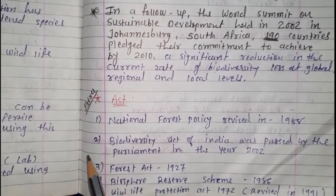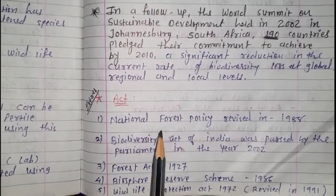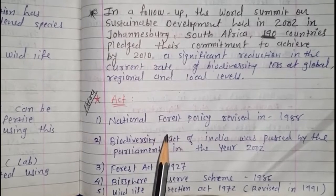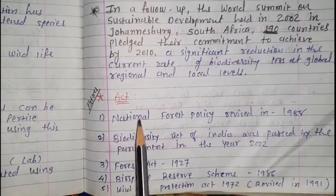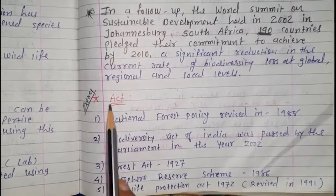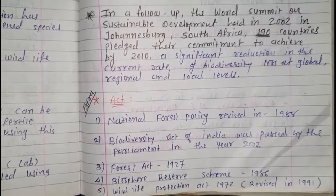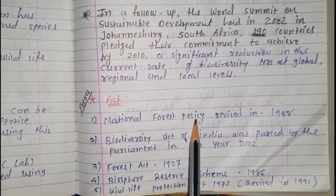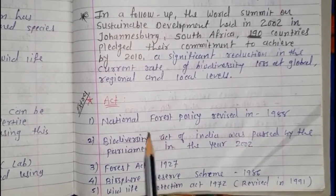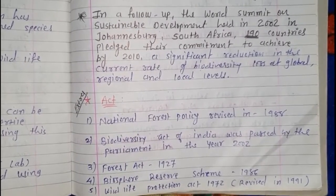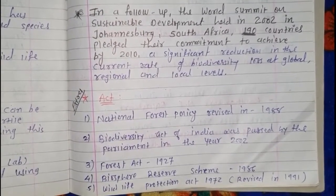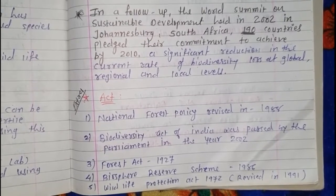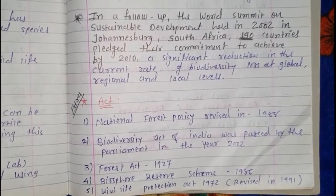Now let's look at some extra topics for competitive exams — these may not be asked in theoretical exams but are important for NEET, AIIMS, and GUJCET. Some acts and laws were introduced in favor of conservation of biodiversity. First: National Forest Policy devised in 1988 — some policies were decided about forests, including which activities should be allowed, which should be banned, how much area should be completely protected, and how much should be accessible to local people. Second: Biodiversity Act of India passed by Parliament in 2002, which brought conservation rules like laws against hunting with defined penalties.